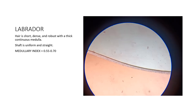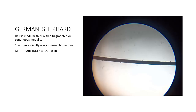Labrador hair is short and dense with a thick continuous medulla, and the medullary index is 0.5 to 0.70. For the German Shepherd, the medullary index range is 0.5 to 0.7. The hair is medium thick, black, with a fragmented and continuous medulla. The hair shaft is wavy or has an irregular structure.